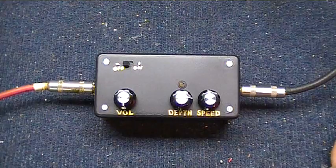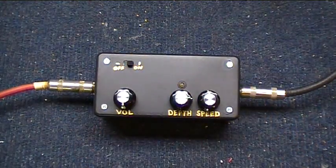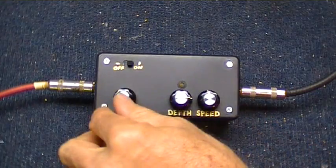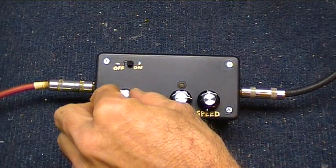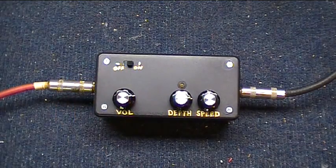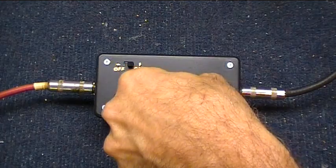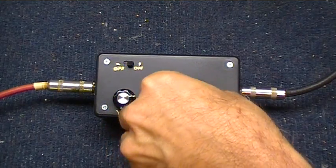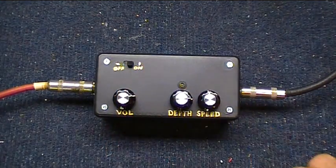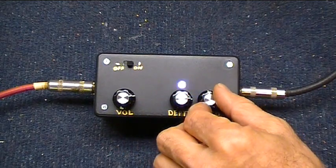All right, finally it's in the box. Let's turn it on. There's a little blinky light. Turn up the volume. Hey, it works. This is the depth knob.